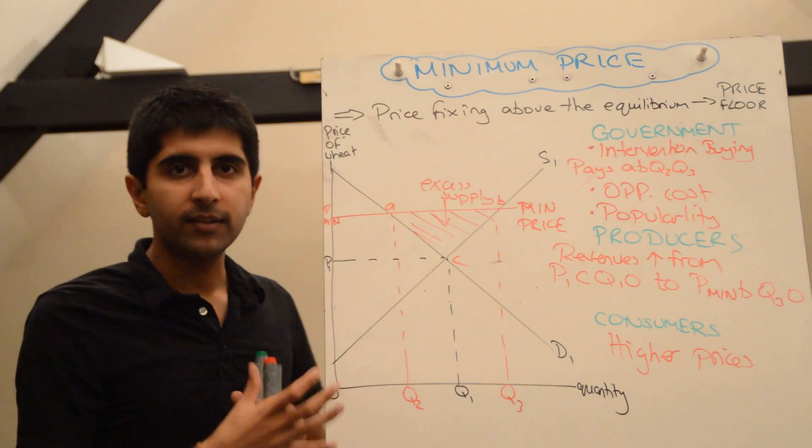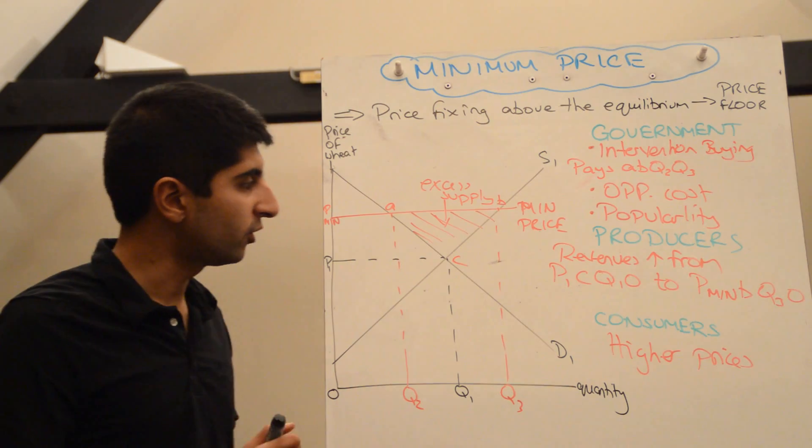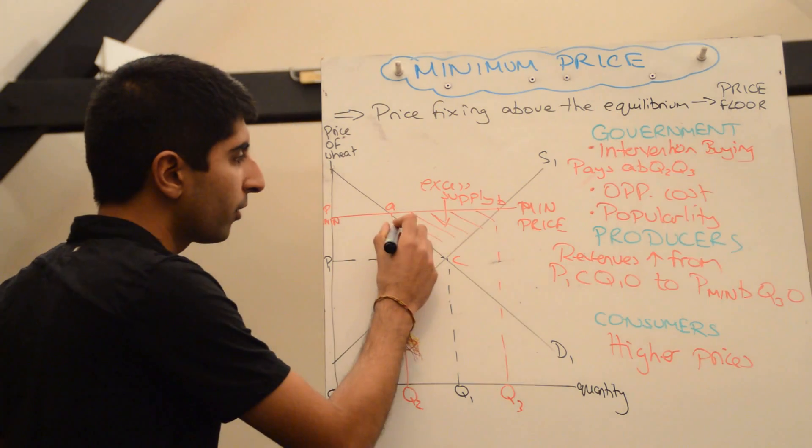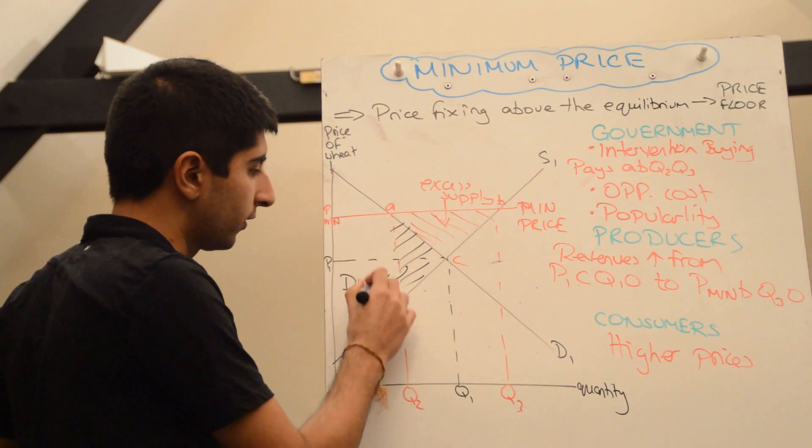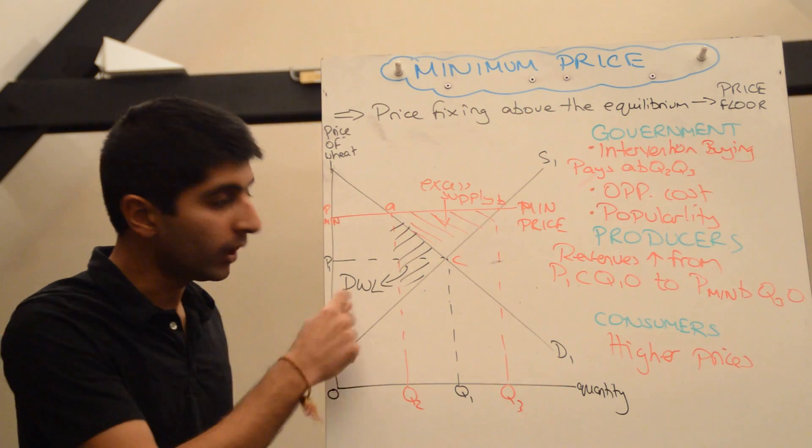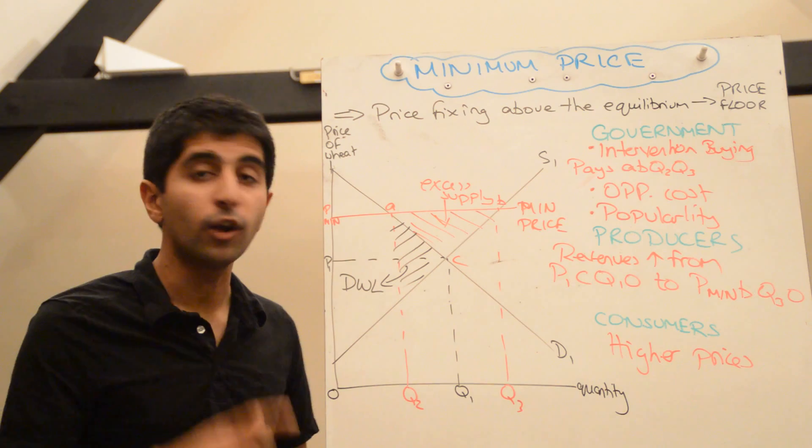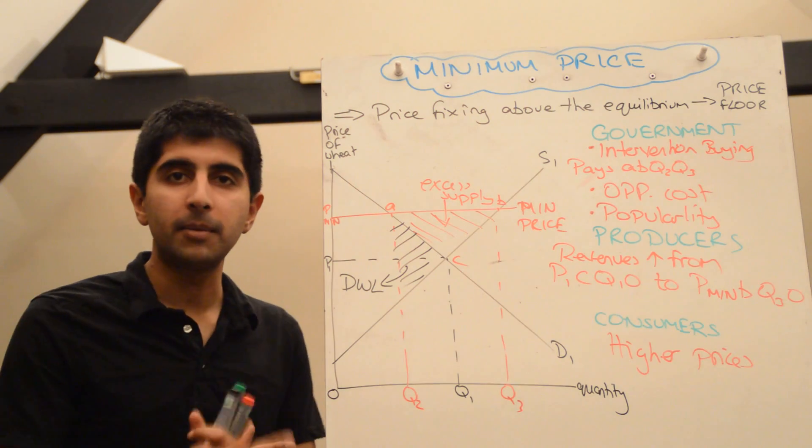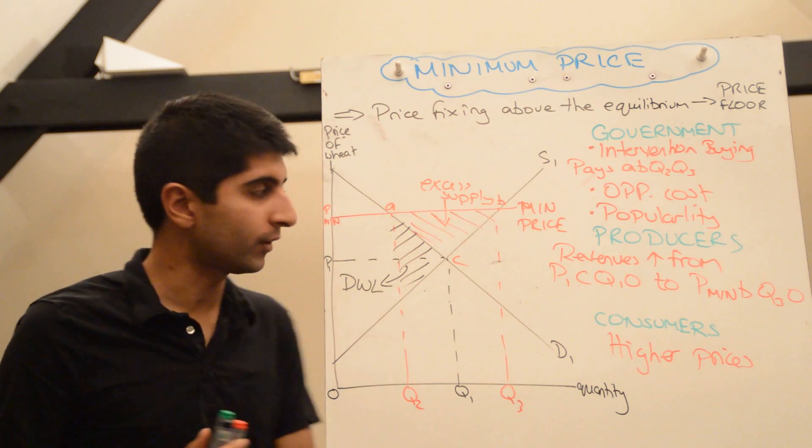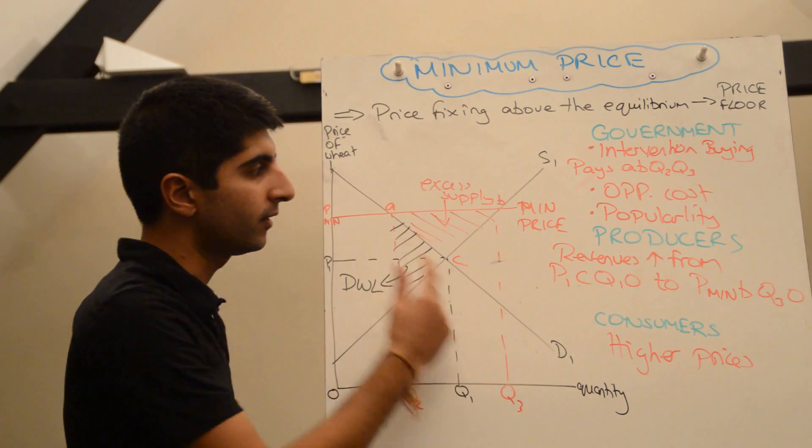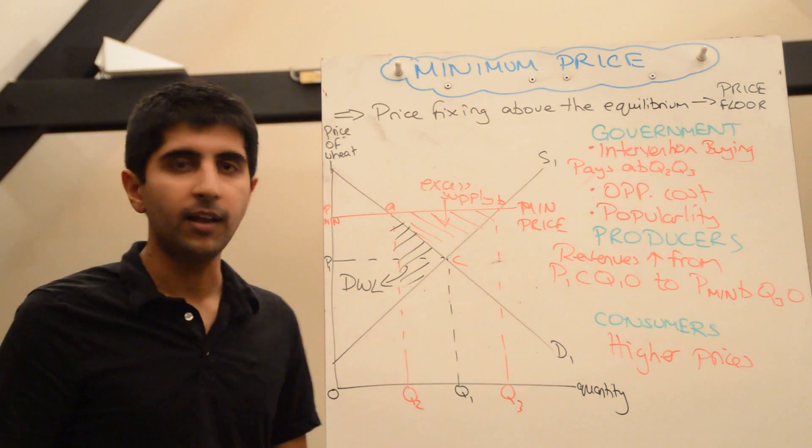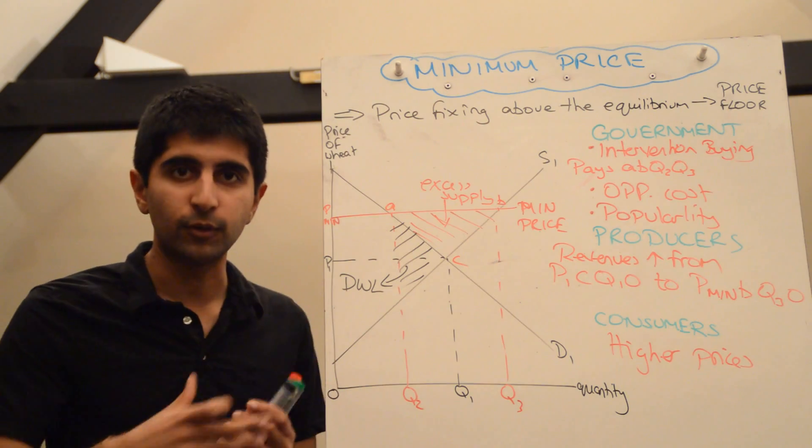So that's the impact a minimum price has on the market. There is one final thing I want to show on here, and that is that a minimum price also imposes a deadweight loss on society. If you want to understand why that deadweight loss is caused, watch my video on why a minimum price causes a deadweight loss. But society does lose out. There is a loss of consumer and producer surplus when a minimum price is imposed on the market, and efficient outcomes are distorted.